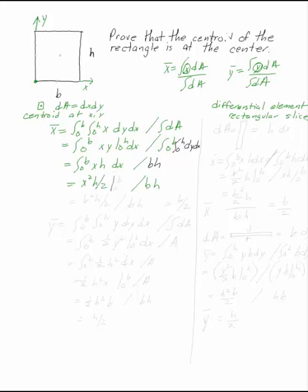x squared h over 2 from 0 to b gives me b squared h over 2 divided by bh. Your h's cancel, one of your b's cancel. This is b over 2.